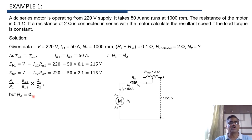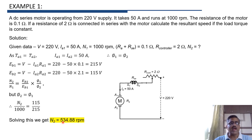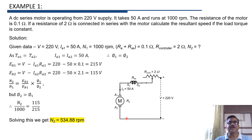Since phi2 equals phi1, N2 upon N1 equals Eb2 upon Eb1. Substituting values: N2 upon 1000 equals 115 upon 215. Solving this gives N2 equals 534.88 rpm. So if a controller resistance of 2 ohm is connected in series with the motor, the speed reduces from 1000 rpm to 534.88 rpm, with load torque maintained constant.